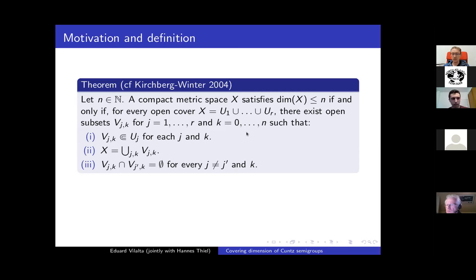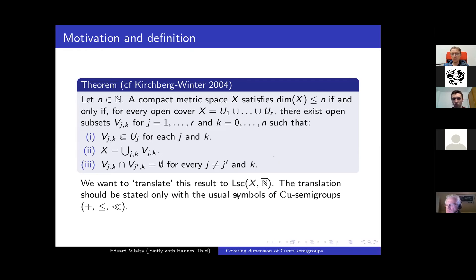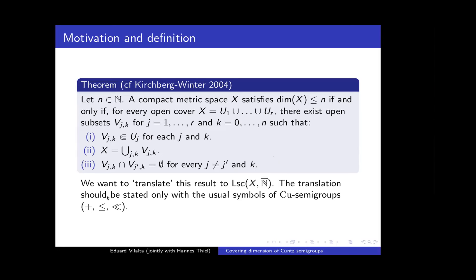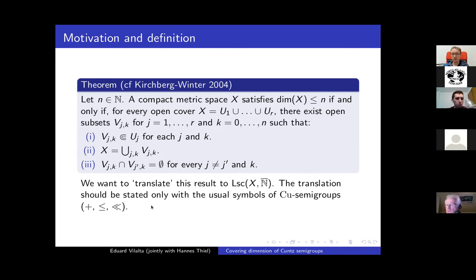The idea to define covering dimension for CU semi-groups is to take this result and translate it. We know that for each compact metric space X there is a CU semi-group LC(X, N-bar) containing it. So we'll try to translate this theorem to LC(X, N-bar), stated only with the usual symbols of CU semi-groups: the addition, the usual order, and the way-below relation. This will be done in two steps: first getting rid of the topological operations — unions, compact containment, and intersections — and then getting rid of all the open subsets.